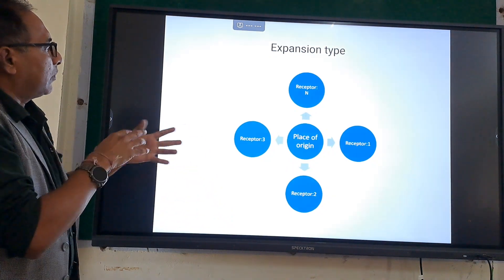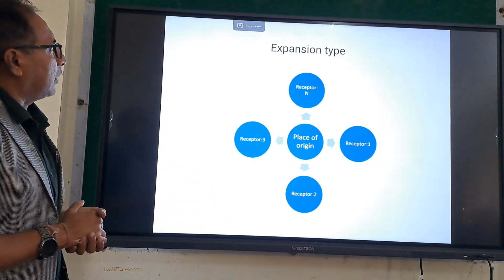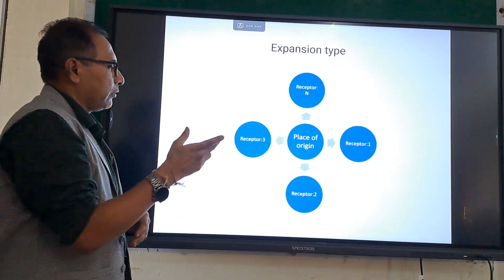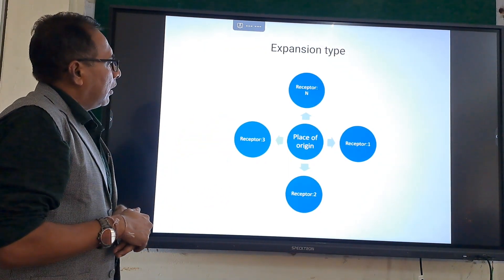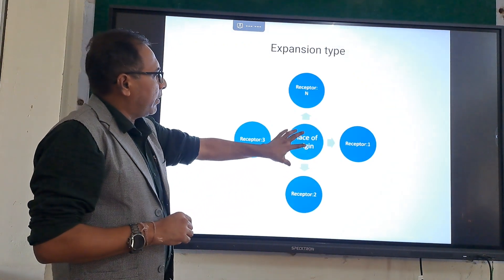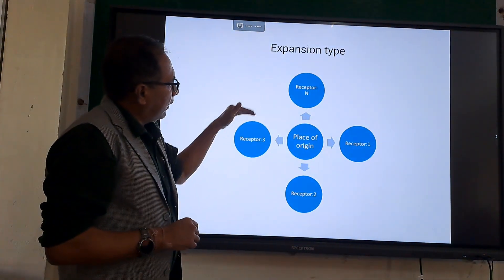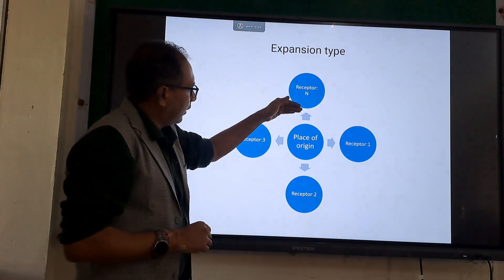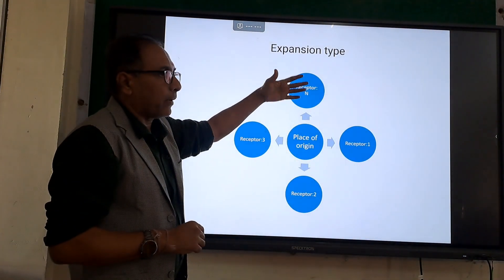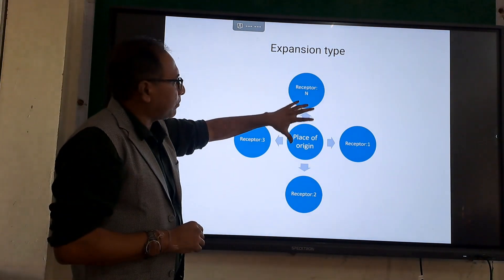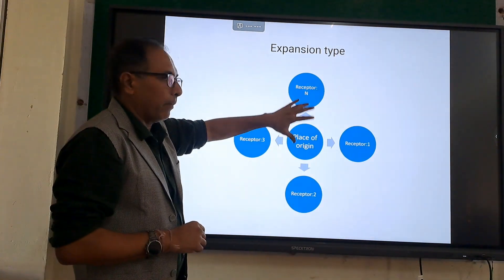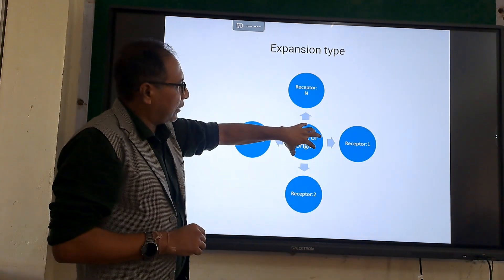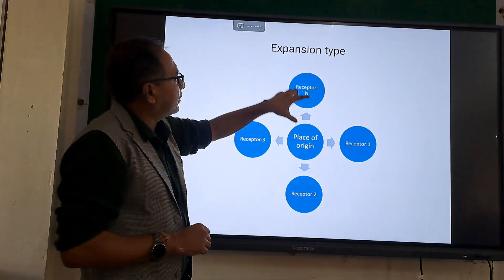This is a diagrammatic explanation of the model of diffusion and its types. In the expansion type, the place of origin remains intact and the diffusion spreads into different directions — receptor one, receptor two, receptor three. A number of receptors will accept the idea, man, material, or whatever is diffused from the place of origin, which remains intact. This is the expansion type.